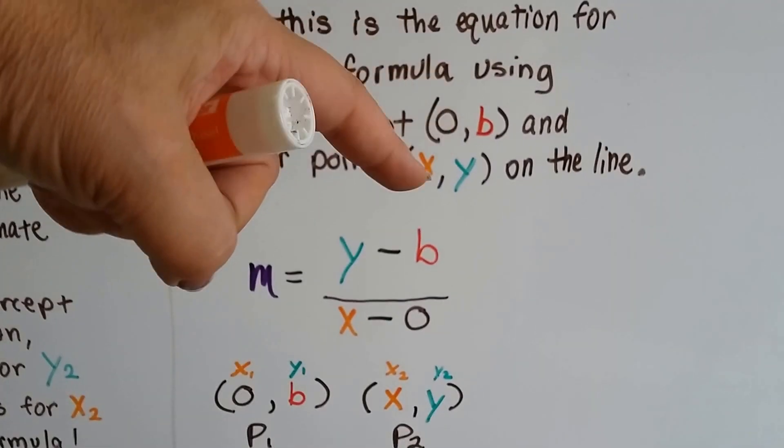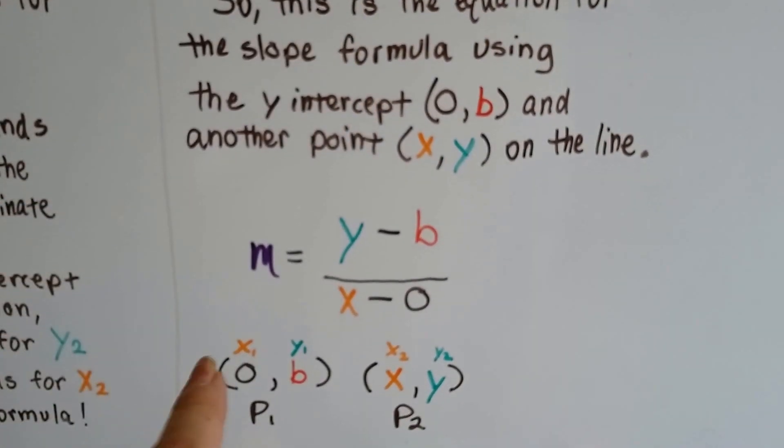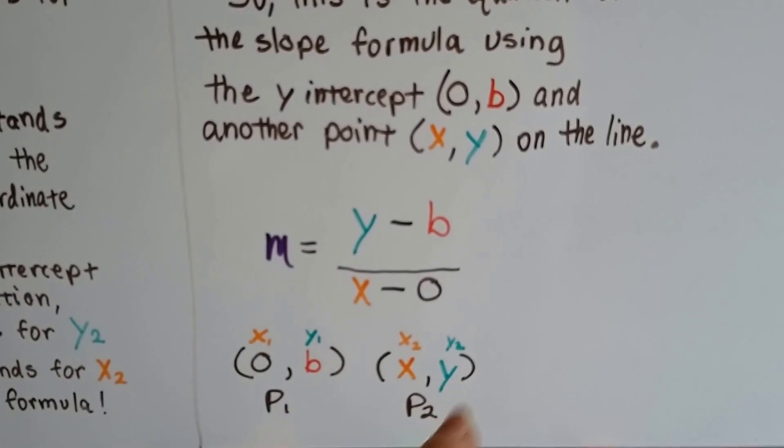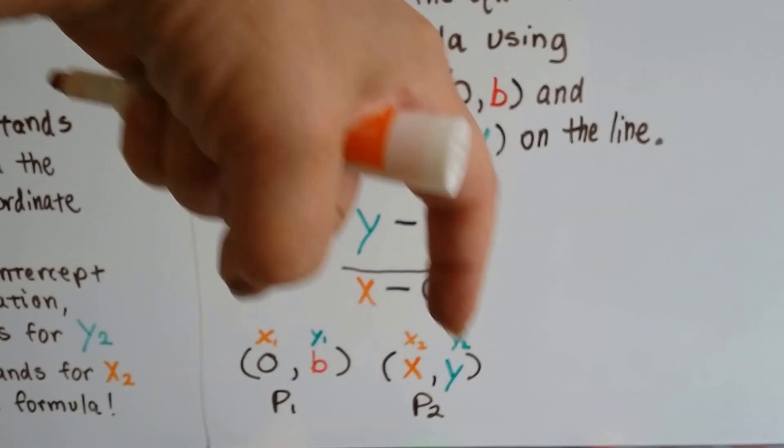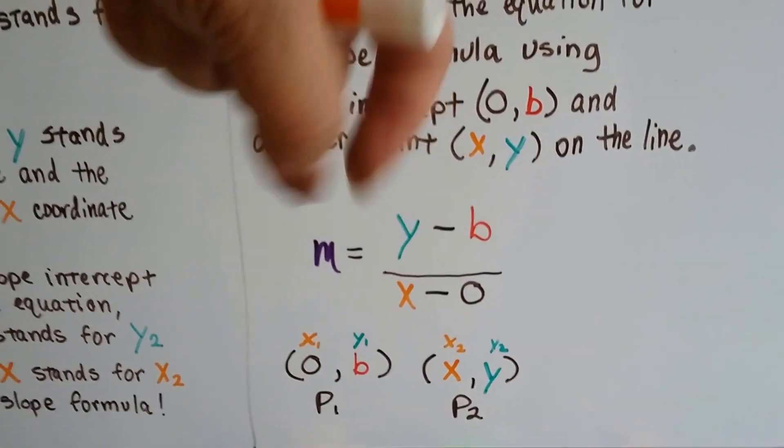So if these are our two coordinates, our ordered pairs, for the slope formula, we need to take y1 from y2. So that means we have y minus b. That's y2 minus y1. That's the slope formula.